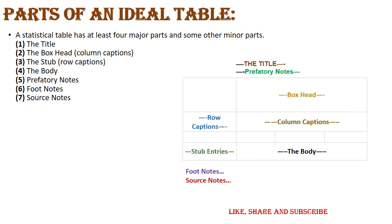Now, what are the parts of an ideal table? A statistical table has at least four major parts and some other minor parts. The parts are: first, the title; second, the box head or column caption; third, the stub or row captions; number four, the body; number five, prefatory notes; number six, footnotes; number seven, source notes.